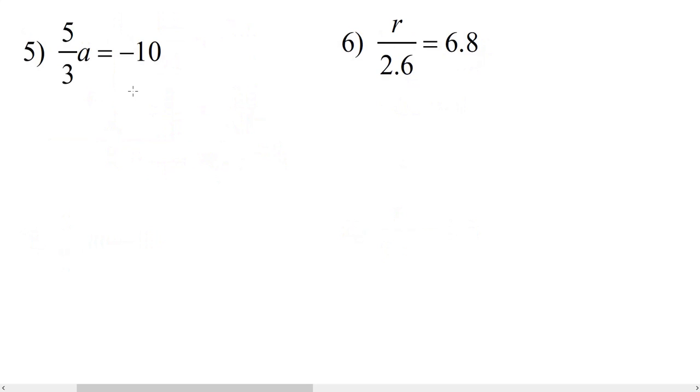For number five, we have 5 thirds a equals negative 10. So we have to undo multiplication by a fraction. And remember, the way we do that is we're going to flip and multiply. So we're going to multiply both sides of this equation by 3 fifths.